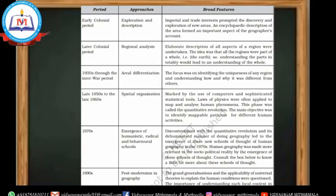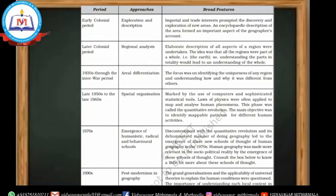The next period is the 1970s. Three schools of thought emerged: Humanistic, Radical, and Behavioral. The quantitative revolution and its dehumanized manner of doing geography led to the emergence of these new schools of thought.